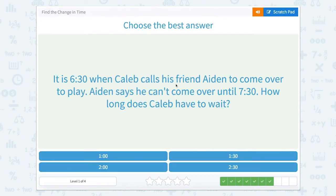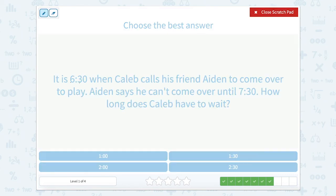It is 6:30 when Caleb calls his friend Aiden to come over and play. Aiden says he can't come over until 7:30. How long does Caleb have to wait? So it's 6:30 when Caleb calls Aiden. Hey Aiden, how's it going? You want to come play? And Aiden might have some homework or chores or have to eat dinner and can't come over until 7:30. So a certain amount of time passes between 6:30 and 7:30 and we have to figure out that time.